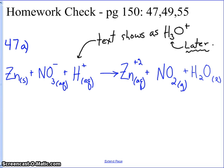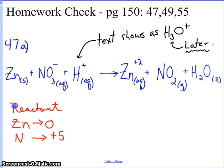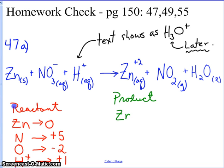In this problem from your text, let's list oxidation numbers again. On the reactant side: zinc has an oxidation number of zero because it is in the elemental state. Nitrogen in the nitrate — that's more complicated, but it turns out the oxidation number of nitrogen is plus five. Oxygen on the reactant side is minus two, and hydrogen is plus one. On the product side, zinc has gone from being neutral on the reactant side to having an oxidation number of plus two.